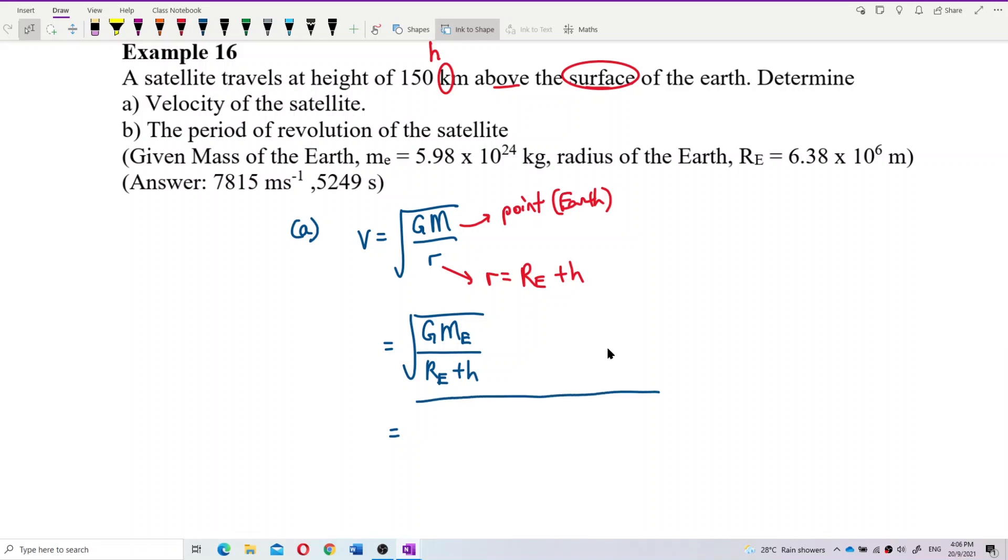Square root. Our G is 6.67 exponent negative 11, mass of Earth is 5.98 exponent 24. Radius of Earth is 6.38 exponent 6.